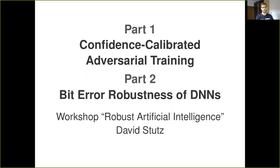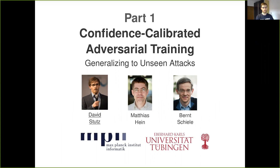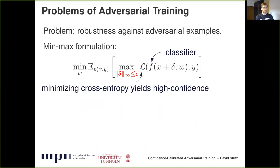This first part on confidence calibrated adversarial training is joint work with Matthias Neyen and Bernd Schiele. In this paper, we address the problem of robustness against adversarial examples. While adversarial training usually focuses on robustness against one specific type of adversarial examples — for example, L-infinity ones — we also consider robustness against various other threat models.